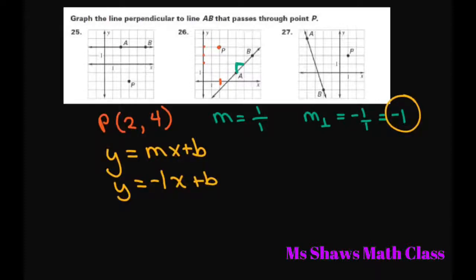And now we're going to plug in our 2, 4. Our y is 4. And our, sorry, our x is 2. So we have 4 equals negative 2 plus b.